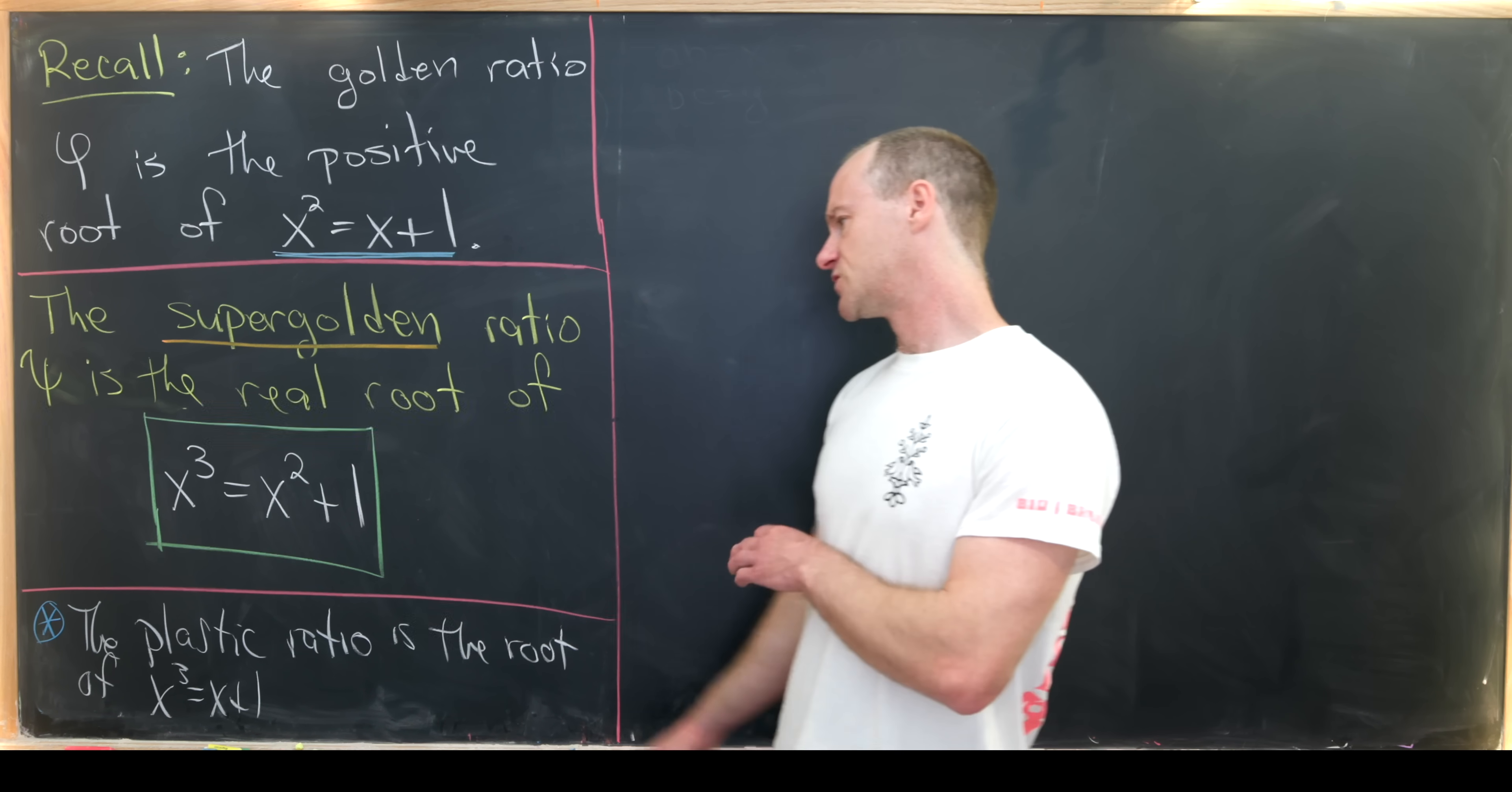So our first substitution will be x equals t plus 1 third. And this 1 third that we're adding on actually depends on these coefficients here. I'll let you guys check into the general method if you want to. Actually, maybe I'll make like a video on the general method if you guys are psyched. Maybe post in the comments.